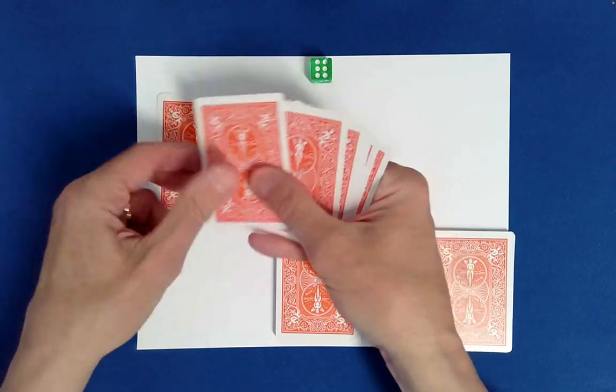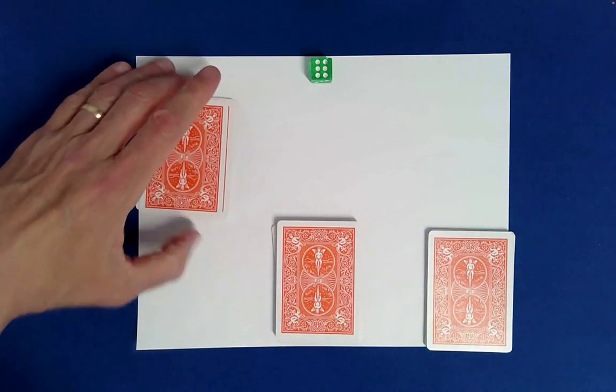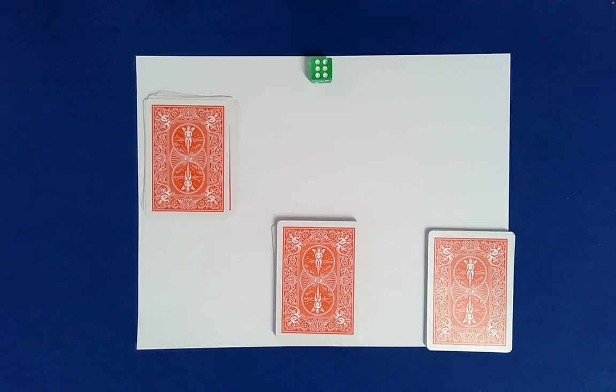So one, two, three, four, five, six, seven, eight, nine. Very good. So you randomly cut nine cards.